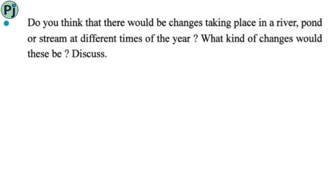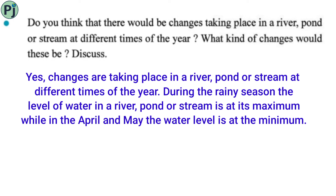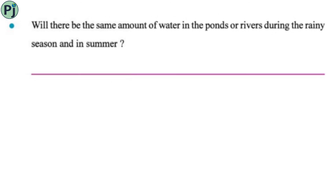Do you think there would be changes taking place in a river, pond, or stream at different times of the year? What kind of changes would these be? Yes, there are changes. During the rainy season, the water level in a river, pond, or stream is at its maximum, while in April and May, the water level is at the minimum.